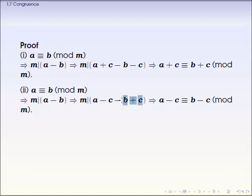I have to factor out negative from b, a negative b and plus c. So the form should look like a minus c minus b minus c. And m is a divisor of this number. Therefore, a minus c is congruent to b minus c modular m.